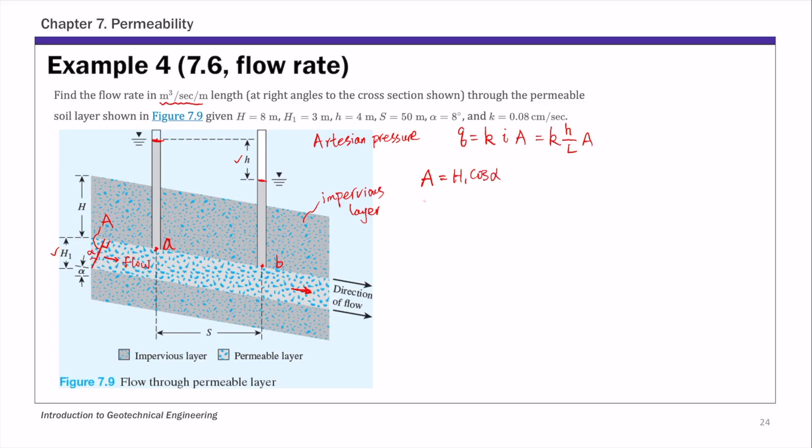And L, that's the distance from point A to point B. And this is again, similar to the previous example. So we know this horizontal distance is S. And this angle here is alpha. Then the distance parallel to the flow direction is defined as L. So L is, again, S over cosine alpha. So this is S over cosine alpha.